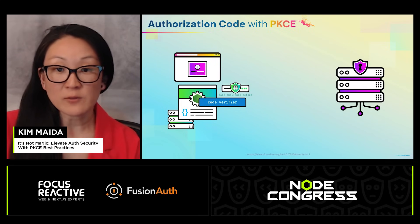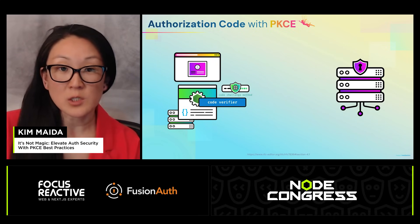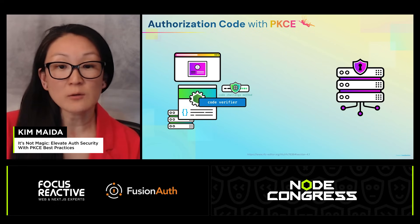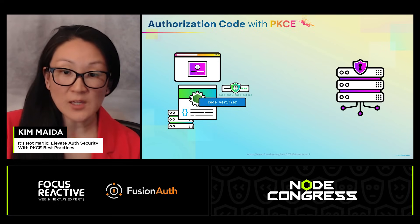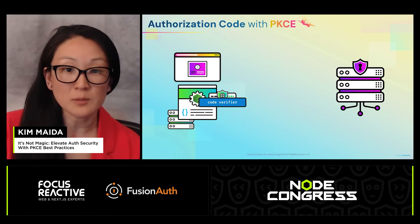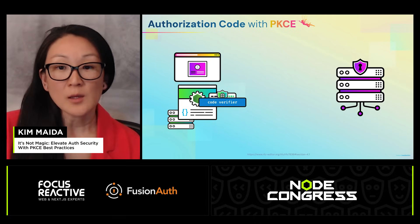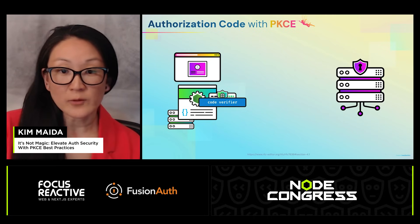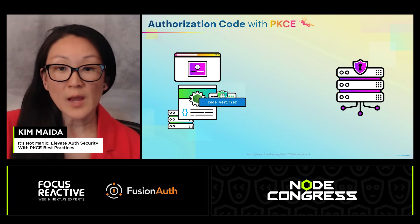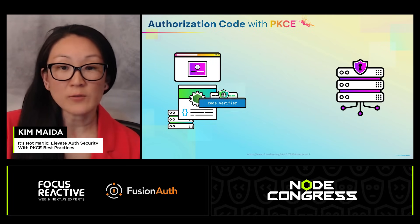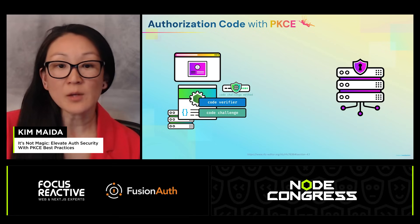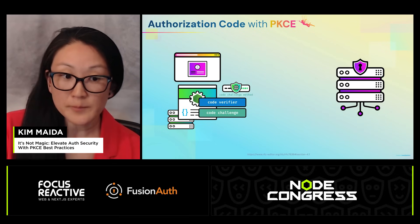We also have a hashing function called the code challenge method. Hashing is irreversible, so once a string is hashed, it can't be unhashed — there's no way to get back to the original input. Using this function, we hash the code verifier to compute a hashed output string, which we're going to call the code challenge.